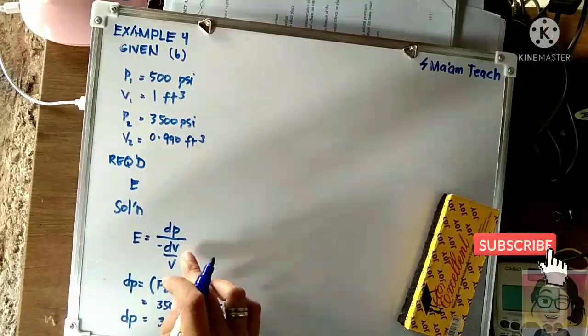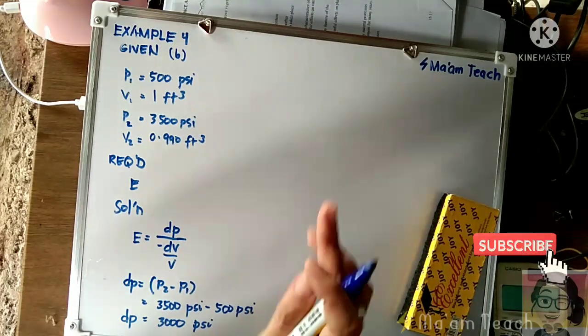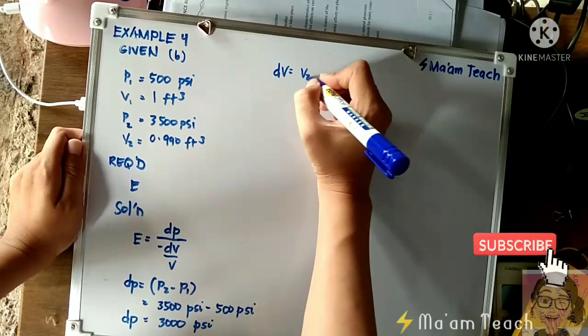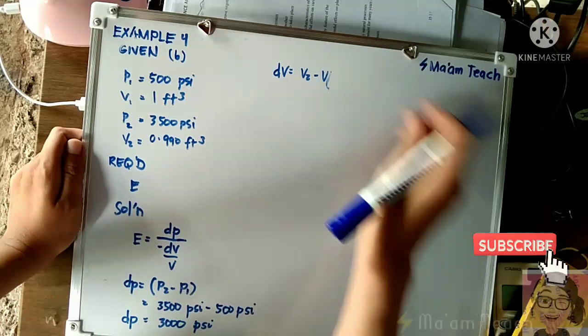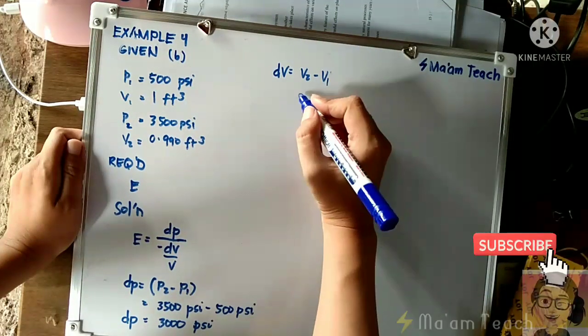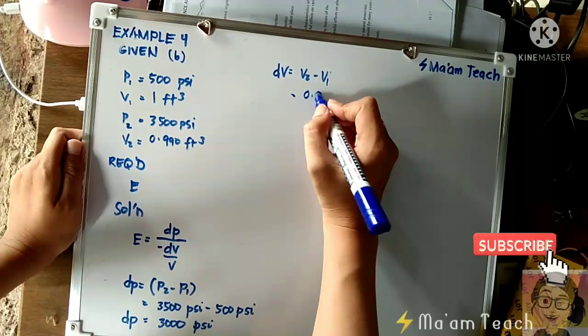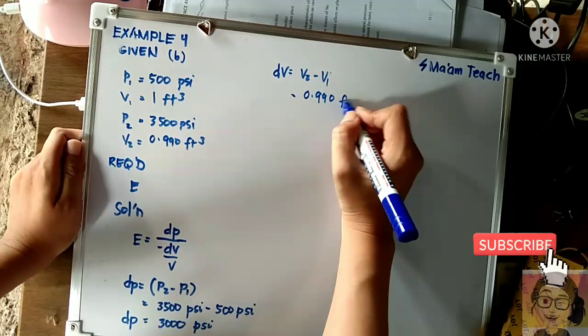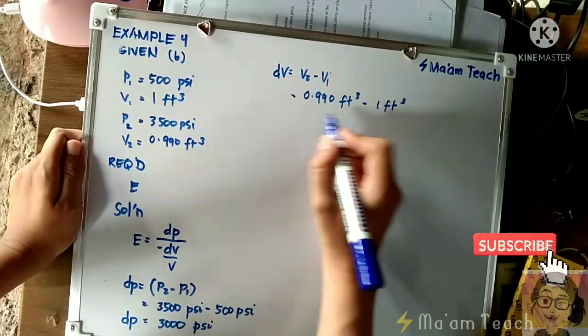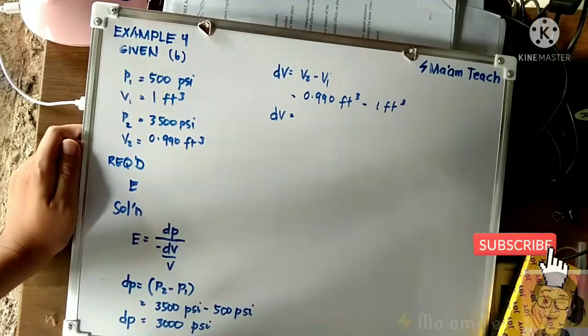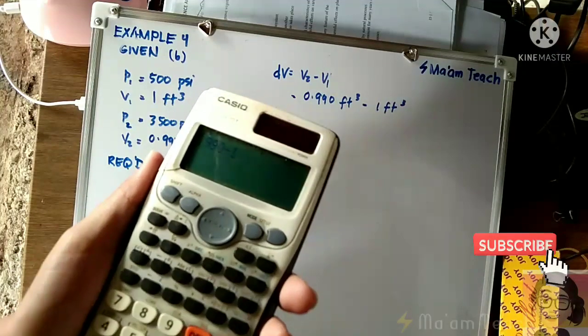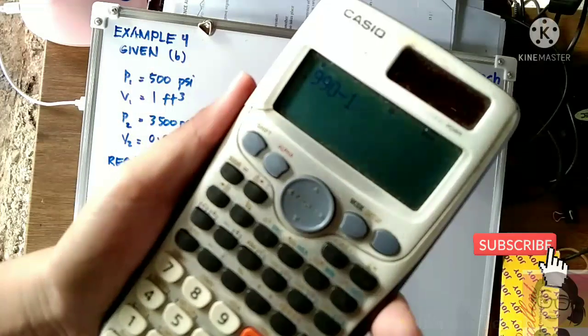Now how about for the change in volume? The change in volume, the same - you have to subtract V2 minus V1. I'm sorry, this is V1. So our V2 is 0.990 cubic foot minus V1 which is 1. So your change in volume, we have 0.990 minus 1.